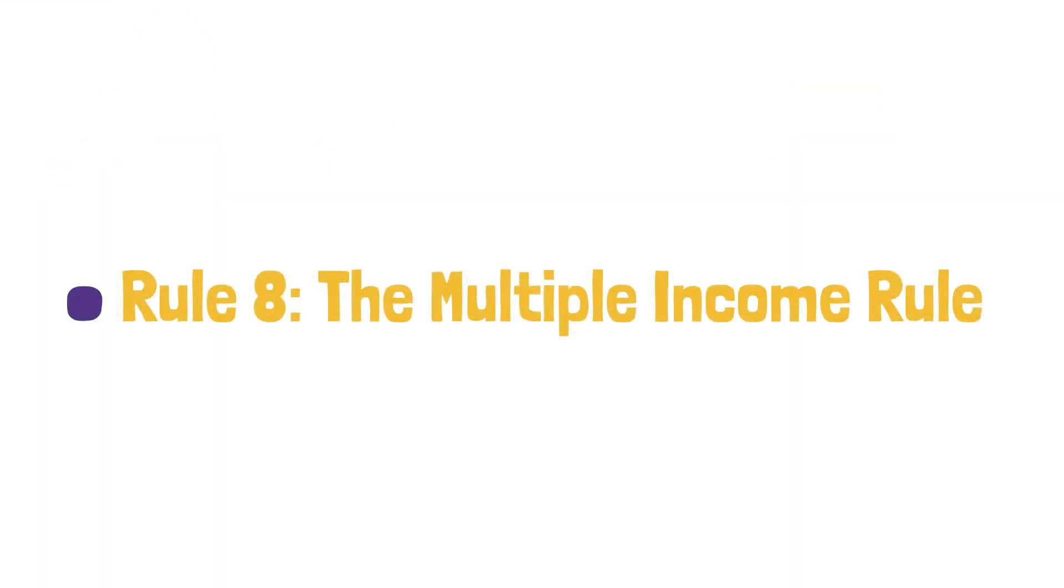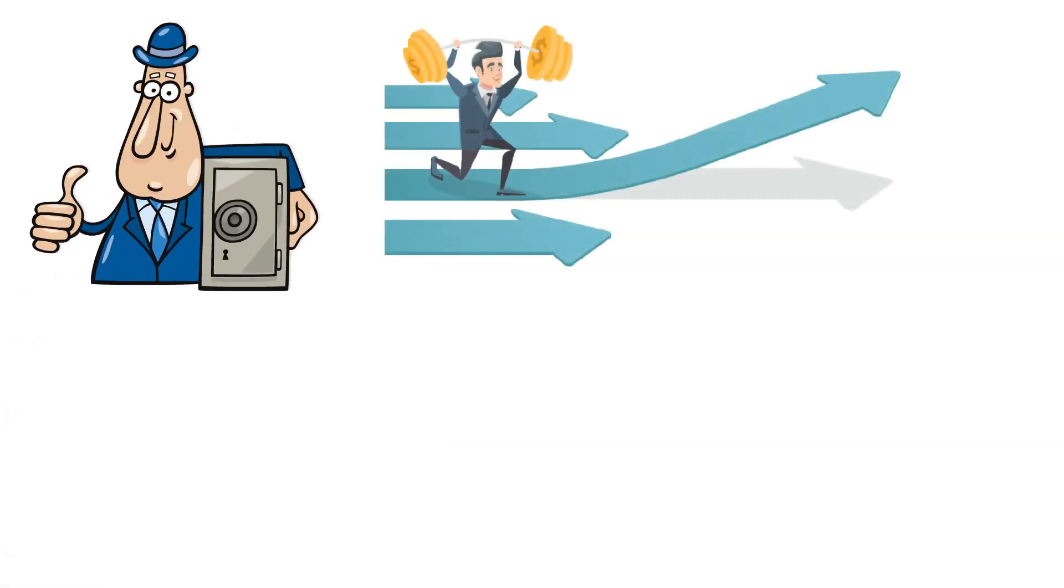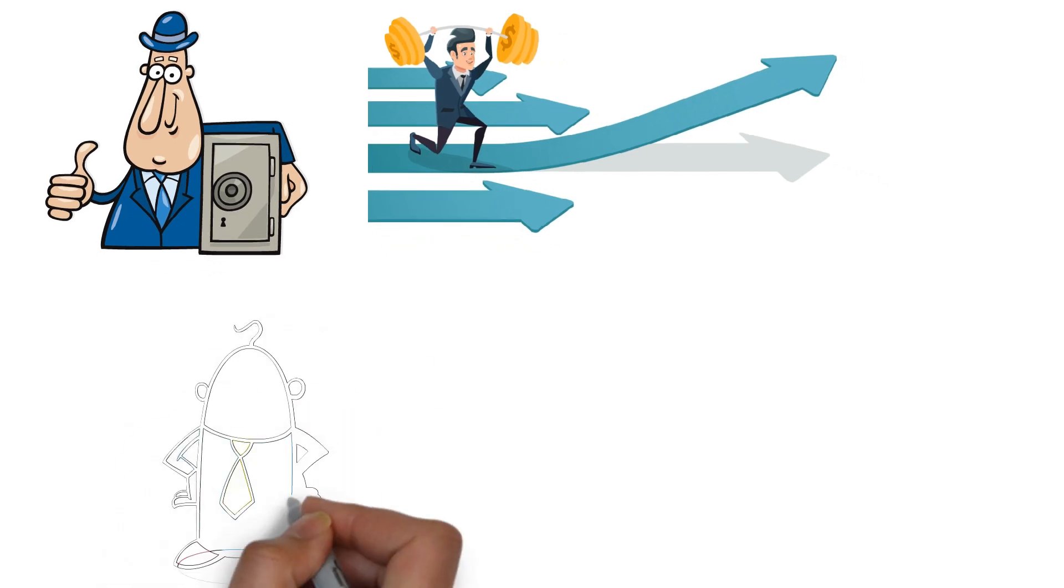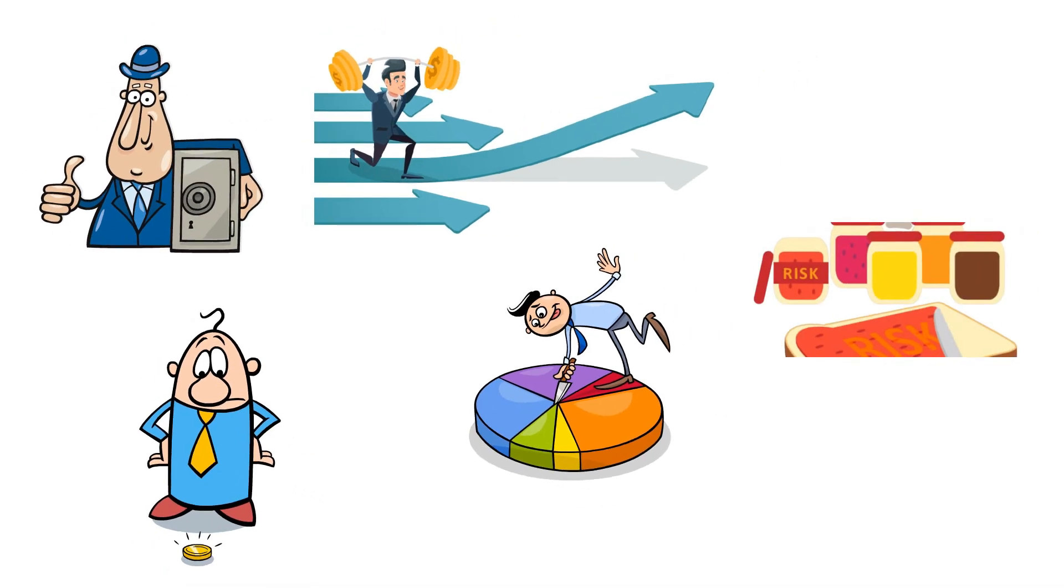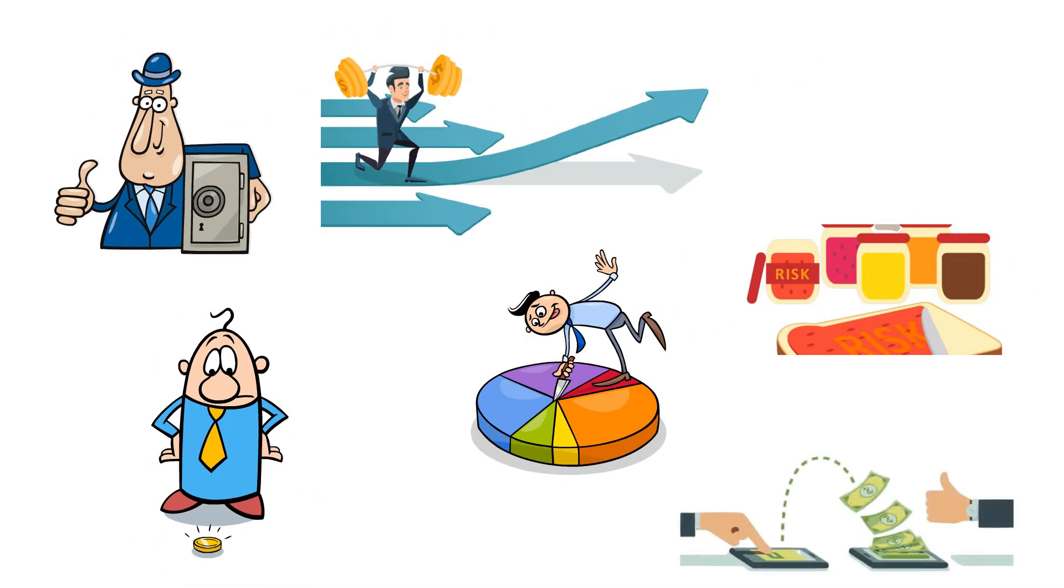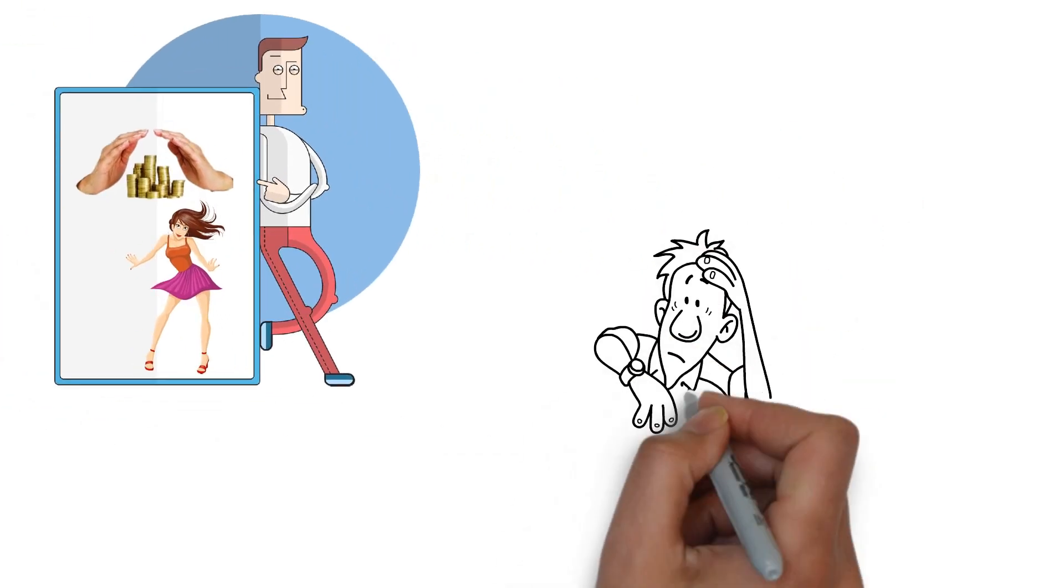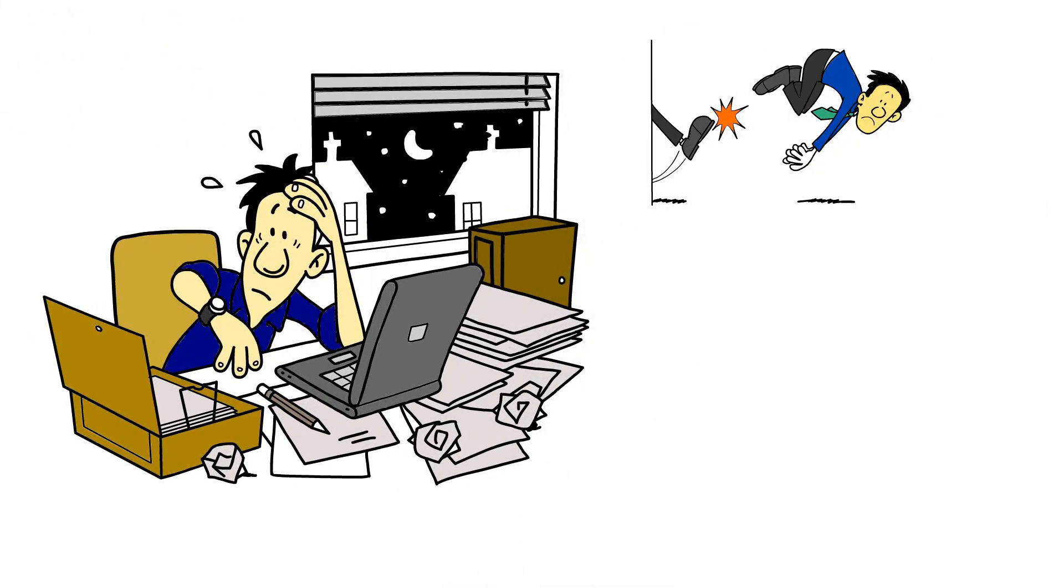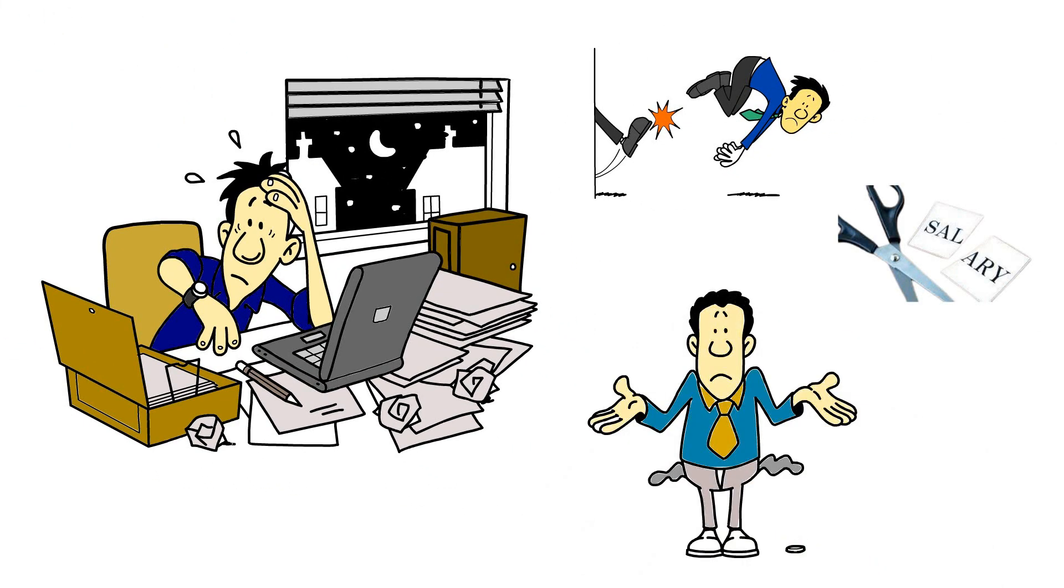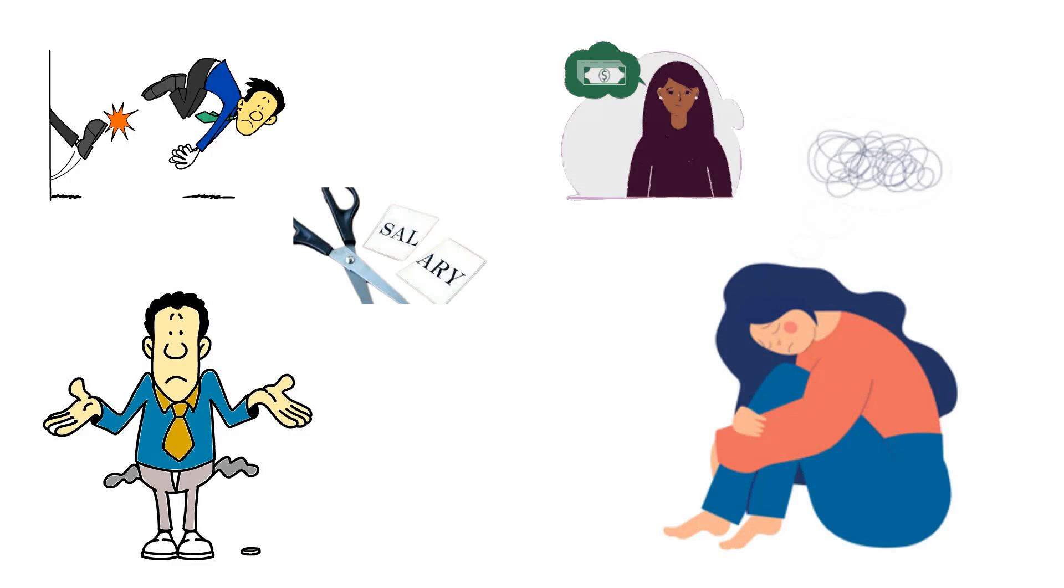Rule number eight, the multiple income rule. The wealthy have a secret that helps them build and maintain their fortunes. They don't rely on a single source of income. Instead, they diversify their income streams, spreading the risk and maximizing their earning potential. This is known as the multiple income rule, and it's a crucial strategy for achieving financial security and independence. Many people depend solely on their nine-to-five job for income, leaving them vulnerable to job loss, pay cuts, or economic downturns. This one-source approach limits their potential earnings and exposes them to higher financial risk.